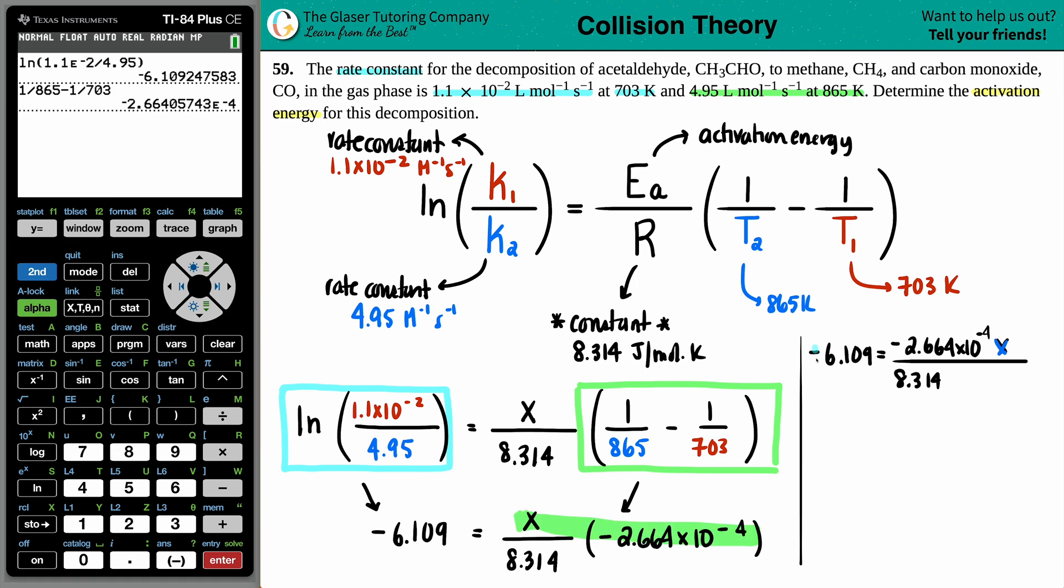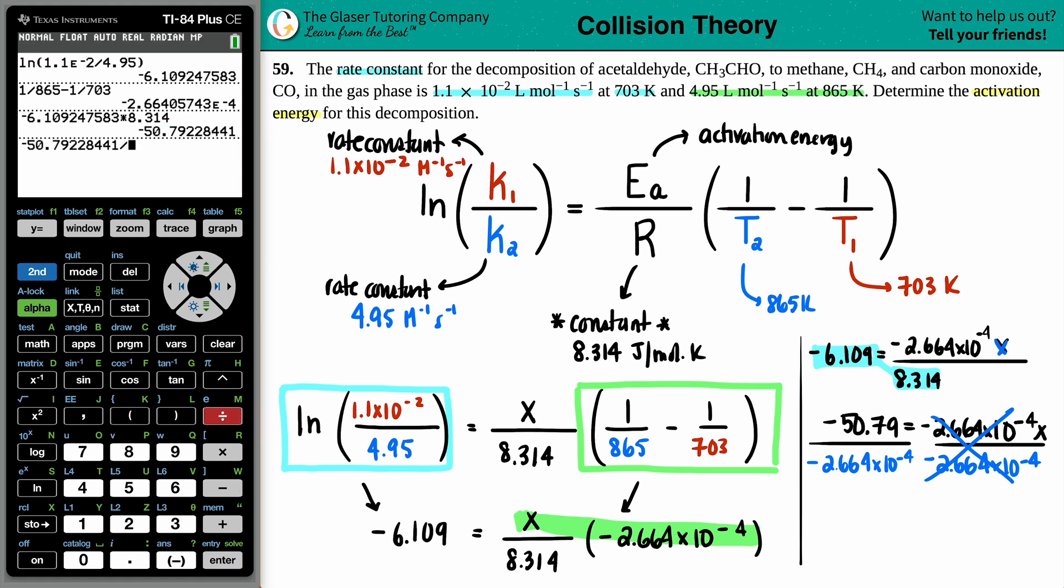Now you can cross multiply. Take these two values and multiply them by each other because now we're just trying to get X by itself back to PEMDAS. I'll take this number because I don't really want to round times 8.314. Negative 50.79 equals negative 2.664 times 10 to the negative fourth times by X. Solve for X. We just divide by that number on both sides. It's this value divided by the 2.664 up top here. Beautiful. Press enter. And there we go.